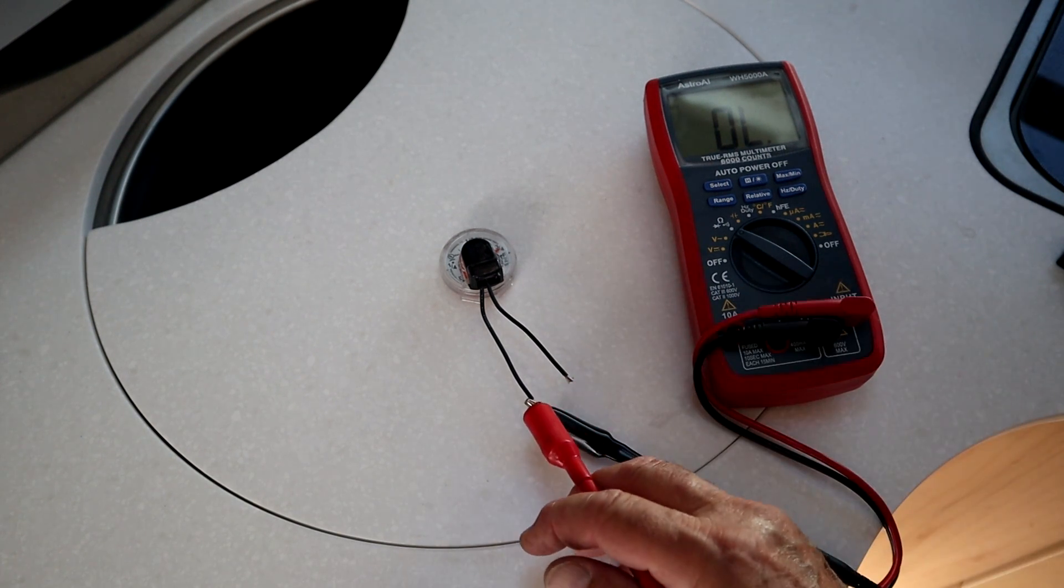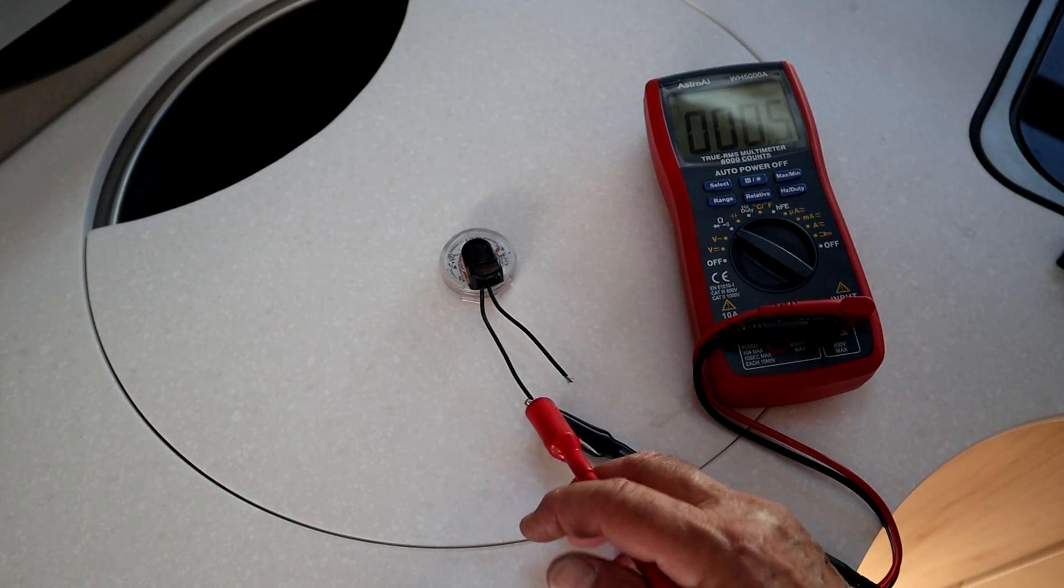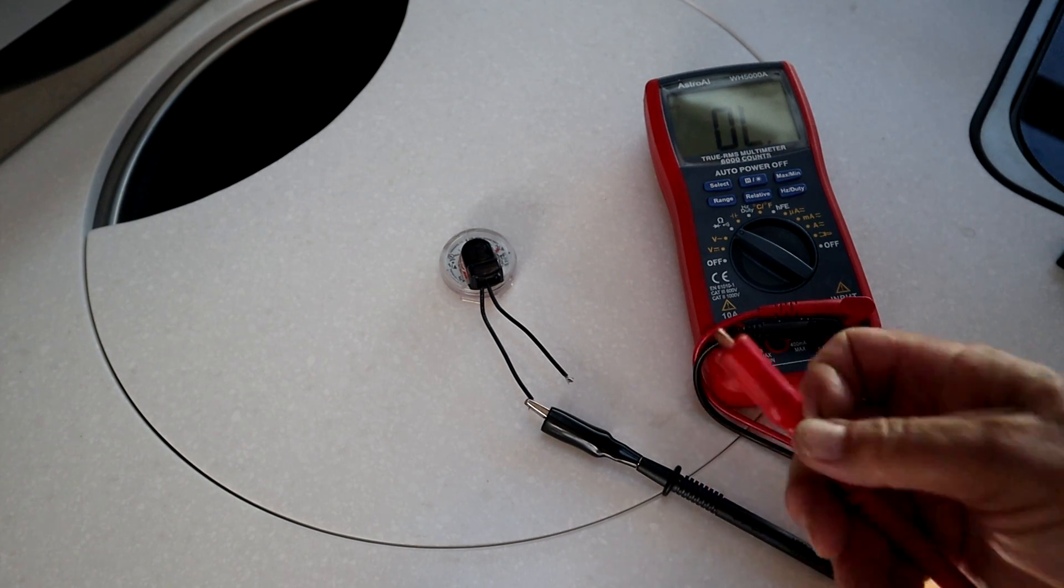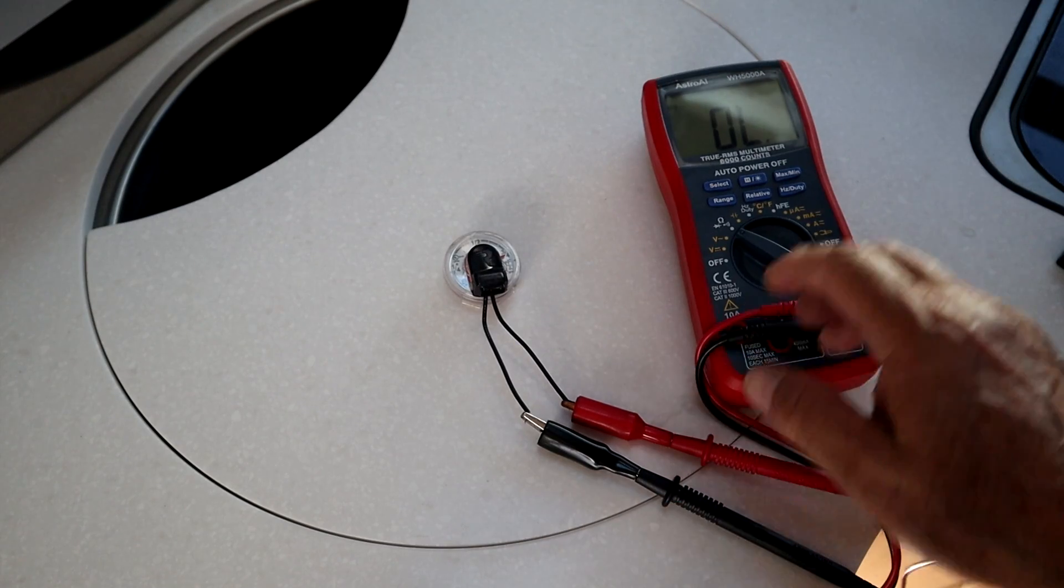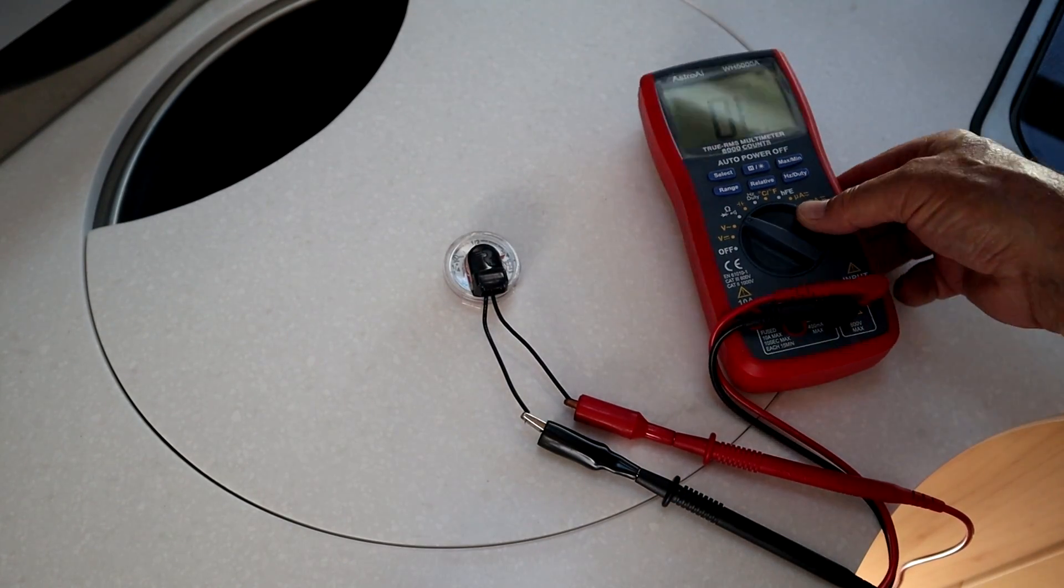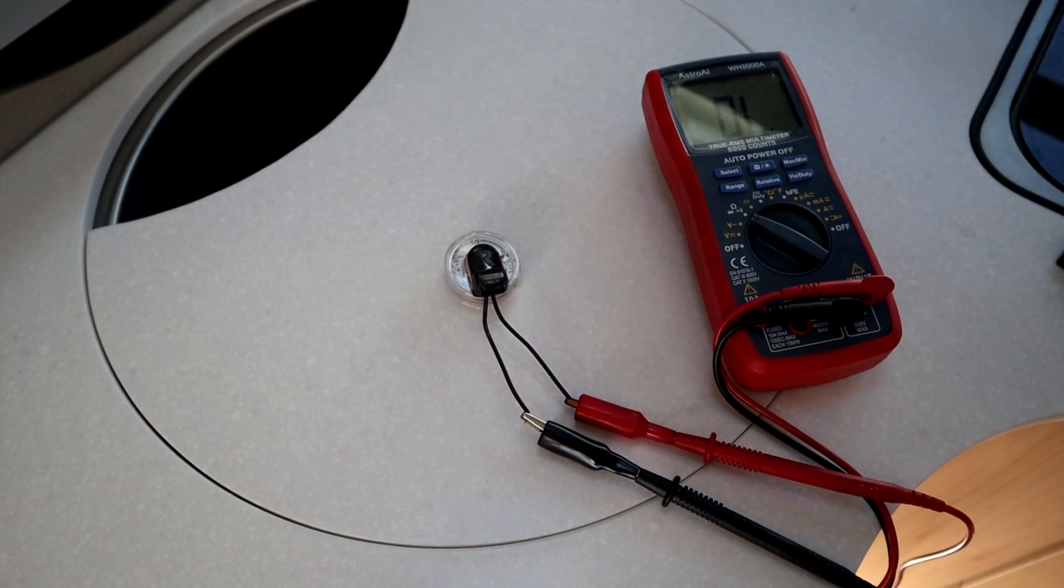Okay, using an ohm meter, we can see that this sensor that I took off is, in fact, defective. You see that it's an open circuit, and so the thin film sensor in there is defective, probably burned out.